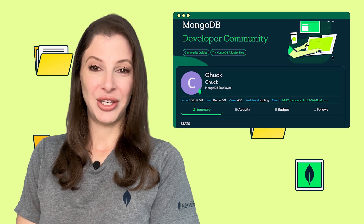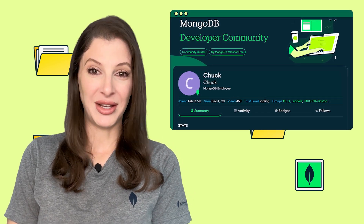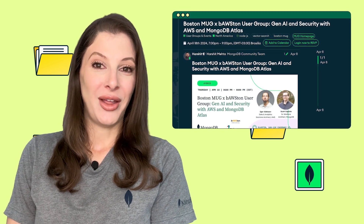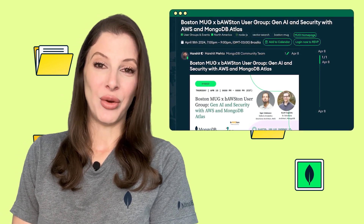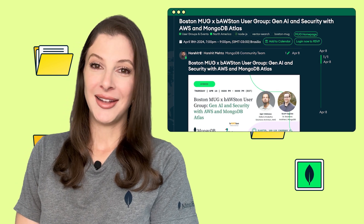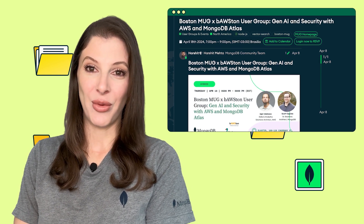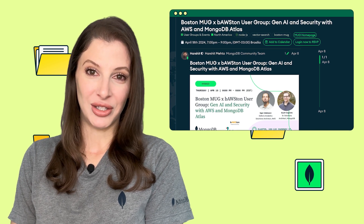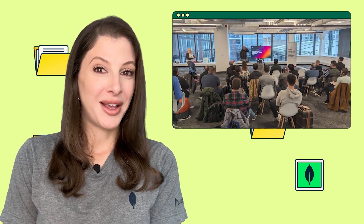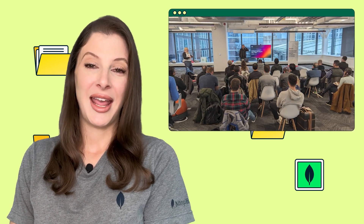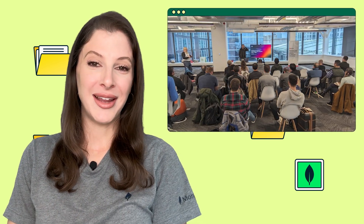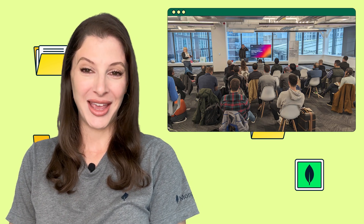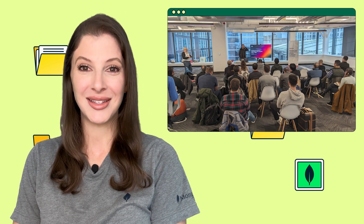The Boston MUG, organized by Chuck, happened in collaboration with the Boston user group at Elastio. Attendees explored the practical application of generative AI on AWS with MongoDB Atlas, alongside the integration of MongoDB Atlas with AWS IAM for enhanced security measures. Igor from AWS discussed building generative AI applications with MongoDB Atlas on AWS, while Scott, senior solutions architect at MongoDB, delved into streamlining security through MongoDB Atlas and AWS IAM integration.